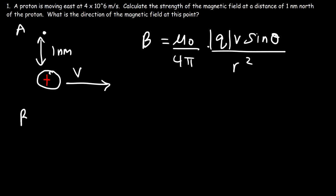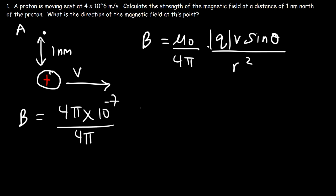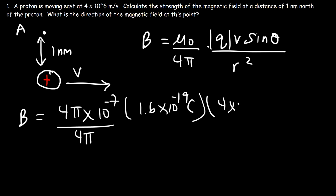Now let's go ahead and plug everything in. The permeability of free space is 4 pi times 10 to the minus 7, and the charge of a proton is 1.6 times 10 to the negative 19 coulombs. We don't need an absolute value for this case — it's already positive. The speed is 4 times 10 to the 6 meters per second.